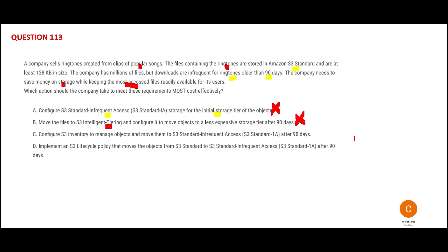Option C tells you to configure S3 Inventory to manage objects and move them to Infrequent Access after 90 days. But the solution is incomplete — it does not say how to move them. If it is manually done, then it is wrong because it is not cost-effective. So we are left with one answer: Lifecycle Policy.